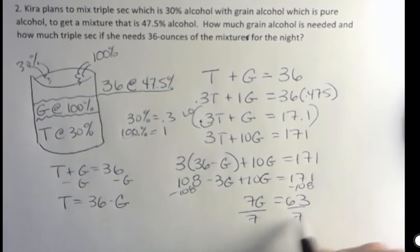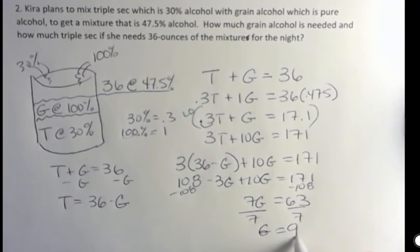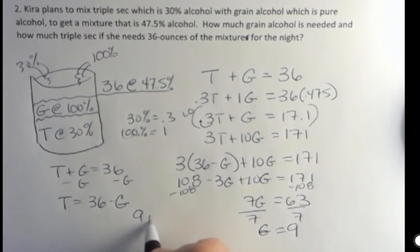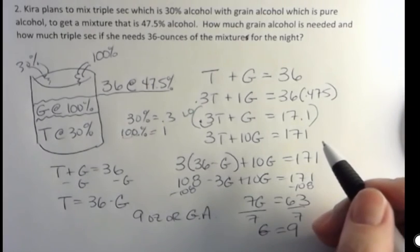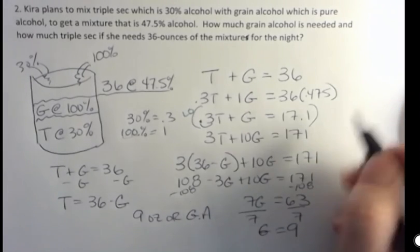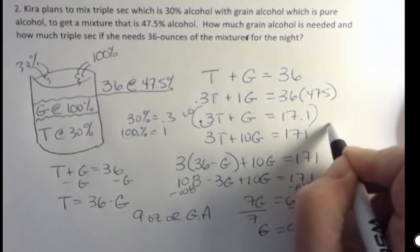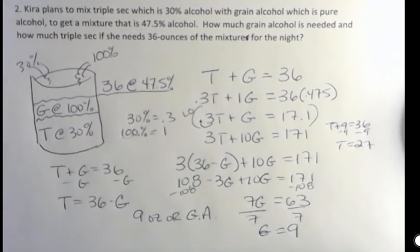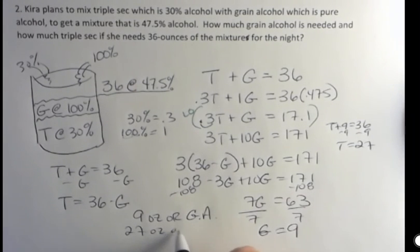And divide both sides by 7 and you get G equals 9. What does that mean? That means we have 9 ounces of grain alcohol. If we have 36 ounces all together, how many ounces do we have of triple sec? Well, we have triple sec plus 9 equals 36 and subtract 9 from both sides. That means she's putting 27 ounces of triple sec in. So we have 27 ounces of triple sec.